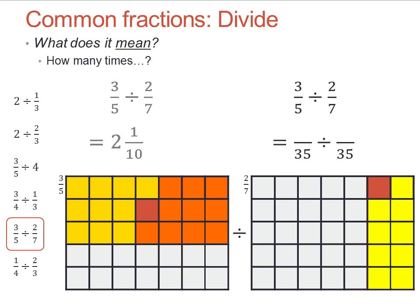So let's write our fractions with the same denominator, thirty-five. Twenty-one pieces for three-fifths, and ten pieces for two-sevenths.